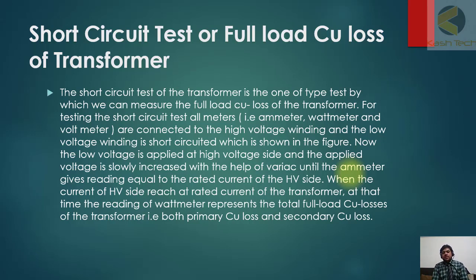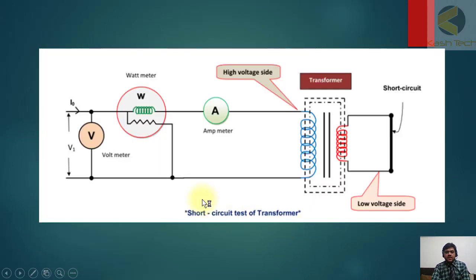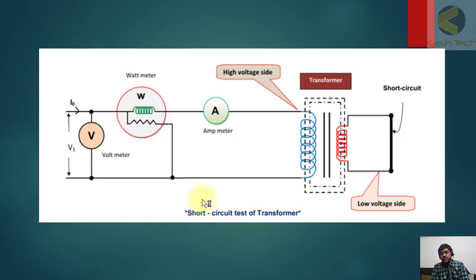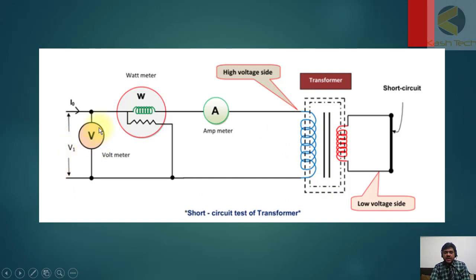When the current of the HV side reaches the rated current of the transformer, the wattmeter reading represents the full load copper losses of the transformer — that is, both primary copper losses and secondary copper losses. Copper losses, as explained in our previous lecture, are due to current flow in the copper windings. In this test, we are short circuiting the low voltage side — you can see the red color is shorted — and the high voltage side is shown in blue. We connect a variable source and a voltmeter.